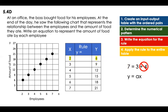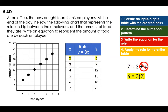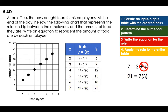That means the equation should follow the multiplicative rule: 6 equals something times 2. How can I find that? It's 2 times what to get to 6? That's 3. So the rule will be: multiply x by 3. It will be y equals 3 times x. Applying the rule to the entire table: 3 times 3 is 9, 3 times 4 is 12, 3 times 5 is 15, 3 times 6 is 18, 3 times 7 is 21. So with that being said, each employee ate three food items throughout the day.